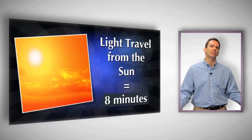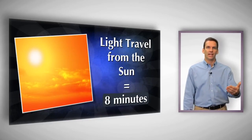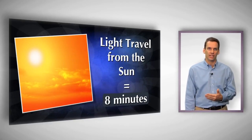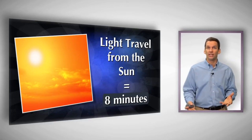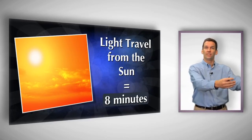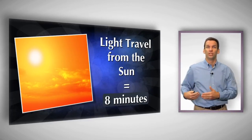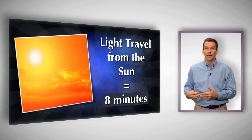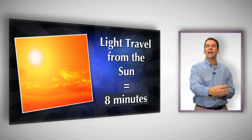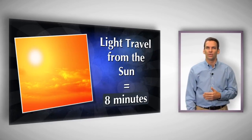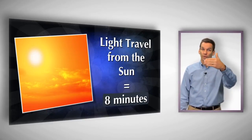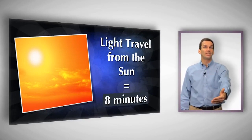If we move out and look at the Sun, the light takes between eight and eight and a half minutes to get to us. So if the Sun were to go out right now, you wouldn't know it for eight to eight and a half minutes — because that's how long it takes the light from the Sun to travel to you. You're actually seeing the Sun as it appeared a little over eight minutes ago. The further out we look, the further back in time we're seeing.